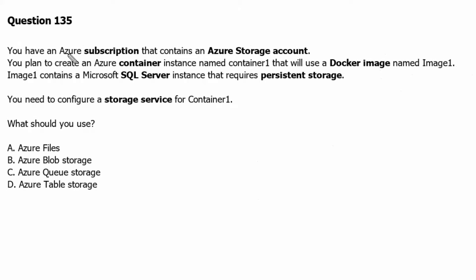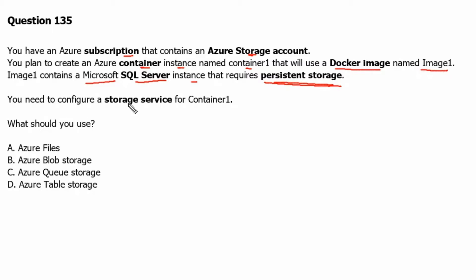Question 135. You have an Azure subscription that contains an Azure storage account. You plan to create an Azure container instance named container1 that will use a Docker image named image1. Image1 contains a Microsoft SQL Server instance that requires persistent storage. You need to configure a storage service for container1. What should you use?